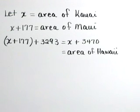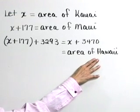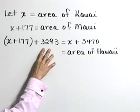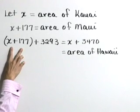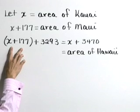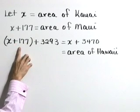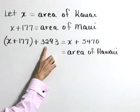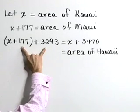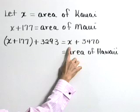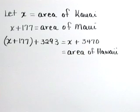We're also given that the area of Hawaii, the biggest island, is 3,293 square miles larger than Maui's area. So we'll represent the area of Hawaii as X plus 177 plus 3,293. Let's go ahead and simplify that, combining our numerical values, as X plus 3,470.